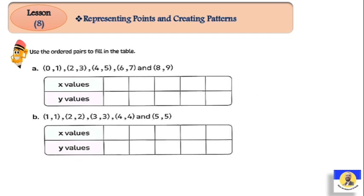لو أنت شايف، عندنا: use the ordered pairs to fill in the table. من خلال الـ ordered pair عاوزنا نكتب الـ x values والـ y values. الـ x values هي الـ x coordinates والـ y values هي اللي بتكون على الـ y axis والـ x axis.